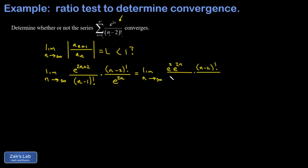We manipulate the factorial in the denominator — you can always split off leading terms of a factorial. So n minus 1 factorial can be written as n minus 1 multiplied by n minus 2 factorial. That allows us to cancel the factorial term in the numerator. We also have e to the 2n in the denominator, so our e to the 2n's cancel, and our n minus 2 factorials cancel.